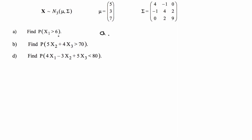Let's get started with the first one. This is finding the probability that x1 is greater than 6. The idea is we're going to write out what the normal distribution is for each transformation, convert to a z-score, and use a z-table to find the probabilities. You can find a z-table online. We need to find mu and the variance for x1. Looking at the mu vector, mu for x1 is 5 and the variance for x1 is 4.